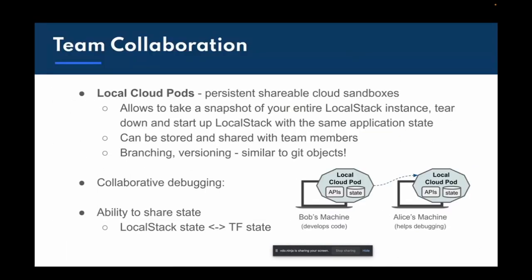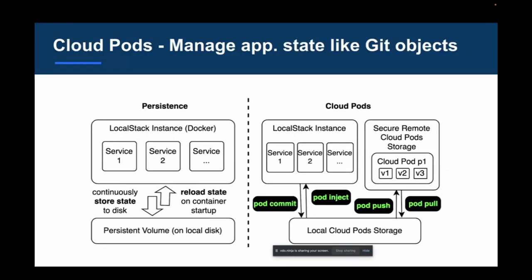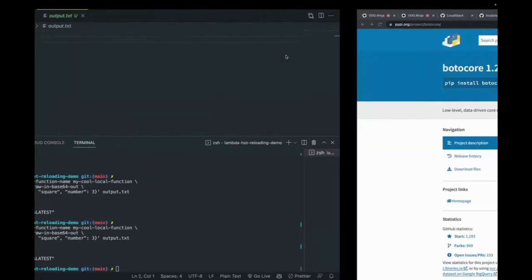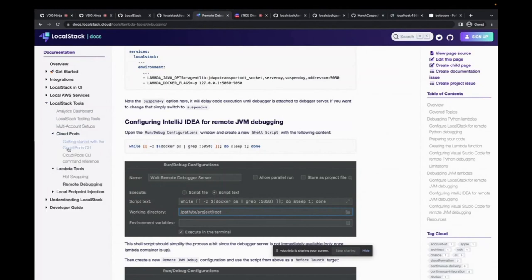LocalStack also has advanced use cases — which with time constraints I won't be able to go through — but you can check the documentation about Cloud Pods. Cloud Pods enables persistable LocalStack instances that you can share with your team members for collaboration. Using Cloud Pods, you can operate cloud objects inside LocalStack instances similar to how Git works — with commands like commit, inject, push, and pull. You can create applications using AWS, test locally with LocalStack, package it as a Cloud Pod, send it to a team member to debug and collaborate together.